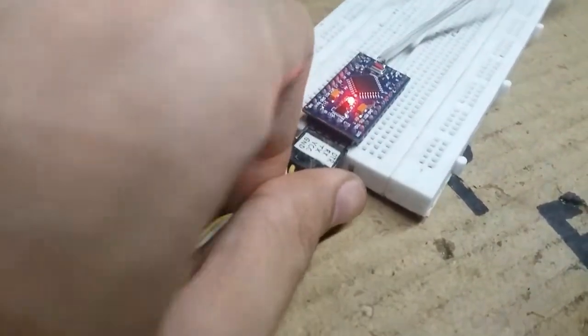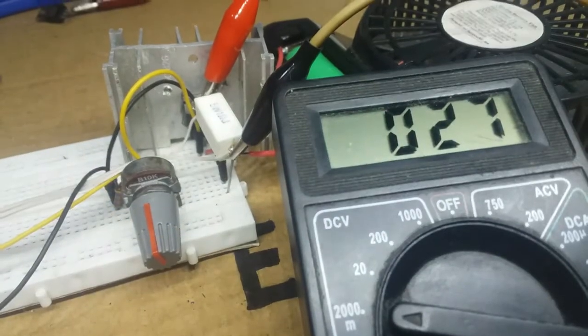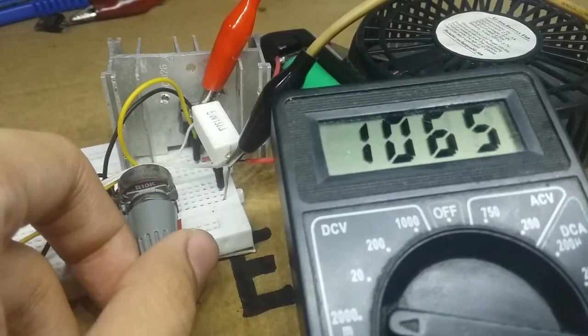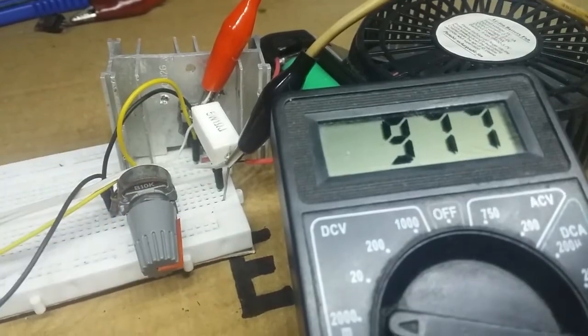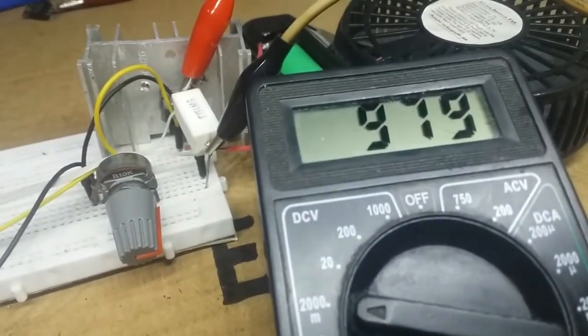We see now, the actual shunt resistor voltage is 27 millivolts. And on the Arduino, it's 24 millivolts on the serial monitor. If we ramp it up, they are not perfectly the same, but I think the values are close enough.